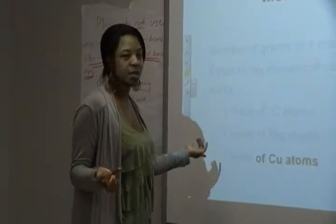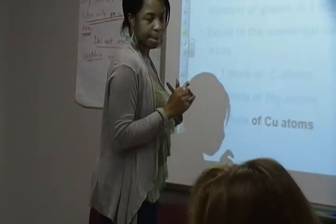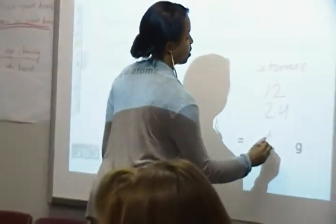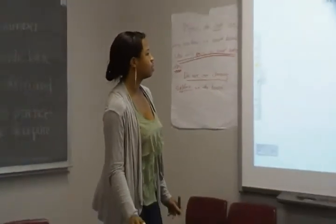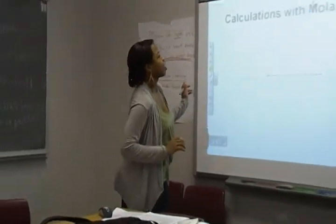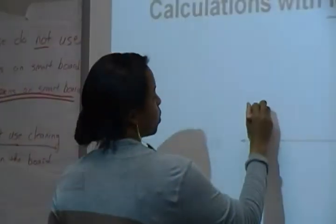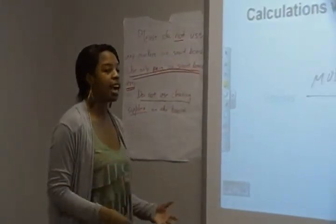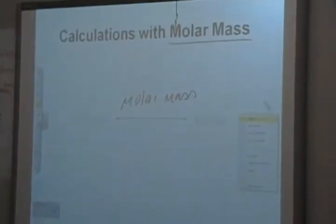For magnesium, you look it up on the periodic table — 24. And then copper, you round it up — 64. The whole purpose of molar mass is to be able to easily convert from grams to moles. In lab, you're often told you need 2 moles or 2 grams of something, and all you're given is the molar mass. So that's the whole purpose — to be able to do conversions quickly.